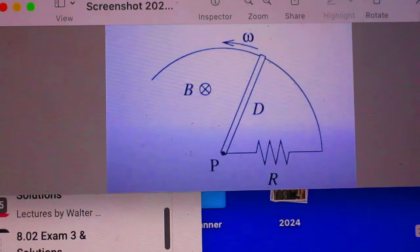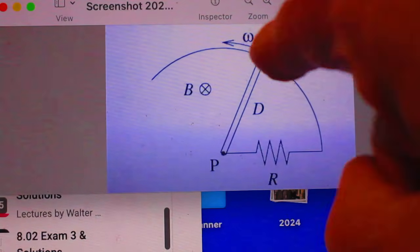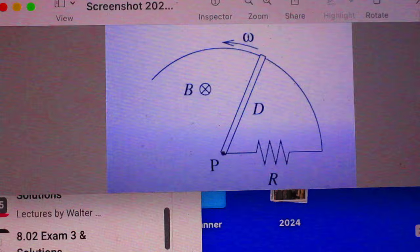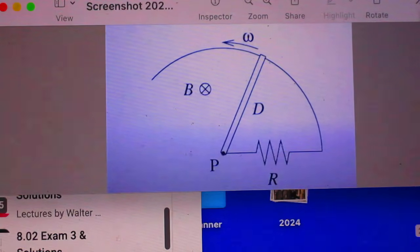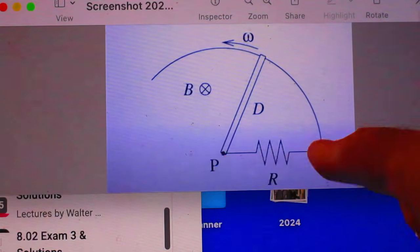So this is the picture of problem 7, exam 2. We have a rod which is rotating with angular velocity omega. Magnetic field is pointing into the blackboard. And here is a resistor. And the question on that exam was what is the current through that resistor.